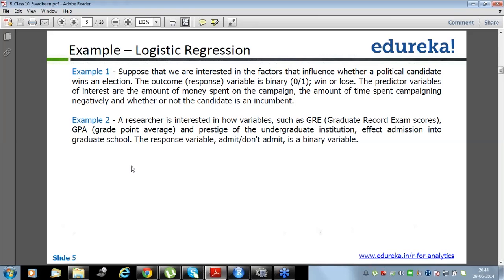So from these two examples, we understand that logistic regression always applies in a situation where we want to find out the probability associated with any of the two outcomes, like admit or do not admit, something like that.